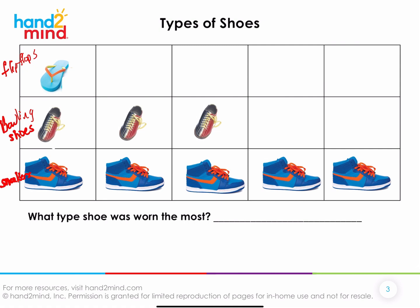So what type of shoe was worn the most? Did you say sneakers? How do you know it's sneakers? Notice that sneakers filled up the whole graph all the way over, so these others have to be less. That's definitely a way to figure out the most. Or you could count: there are five sneakers, three bowling shoes, and one flip flop. Is three less than five? Yes. Is one less than five? Yeah. So it has to be sneakers.